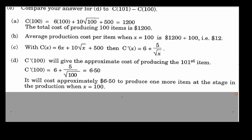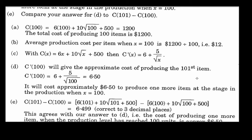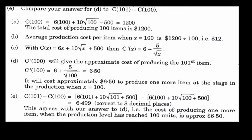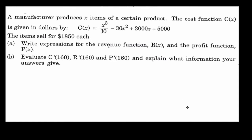The last part asks us to compare C'(100) with C(101) − C(100). If we calculate the cost of producing 101 items and subtract the cost of producing 100 items using our calculator, we get a value very close to $6.50 — confirming that the marginal cost derivative is a good approximation.